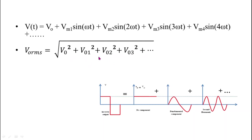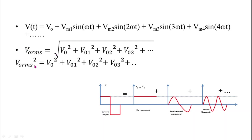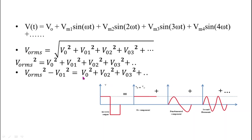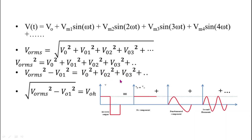The RMS value of the inverter output voltage is: V₀RMS = √(V₀² + V₀₁² + V₀₂² + V₀₃² + ...). Squaring both sides and moving V₀₁ to the left-hand side, we get: V₀RMS² − V₀₁² = V₀² + V₀₂² + V₀₃² + ... All components on the right — DC, second harmonic, third harmonic — are undesirable, while V₀₁² is the desirable term. Therefore, we write: V₀RMS² − V₀₁² = V₀H², where V₀H is the harmonic voltage.